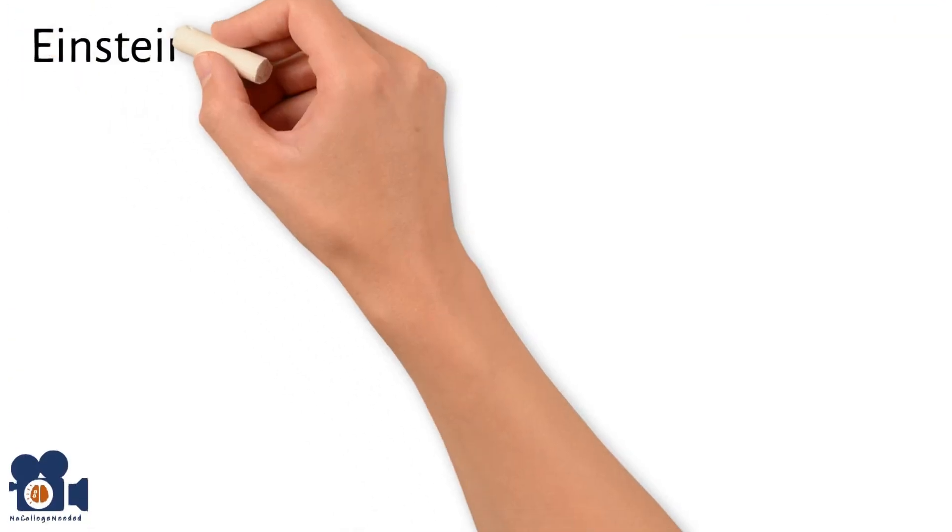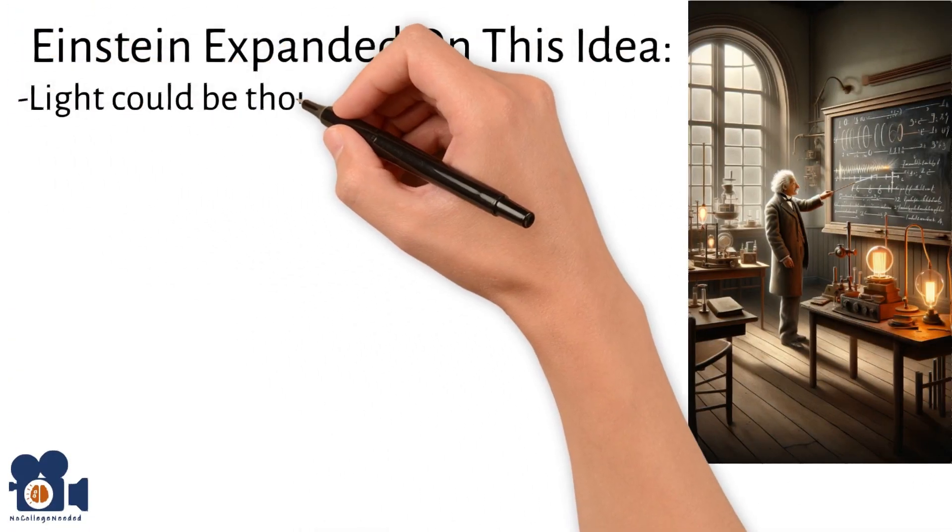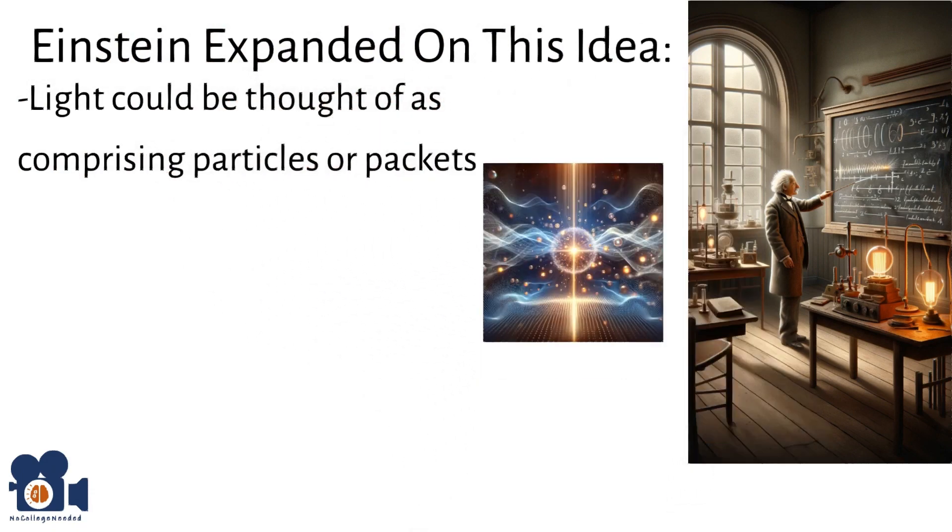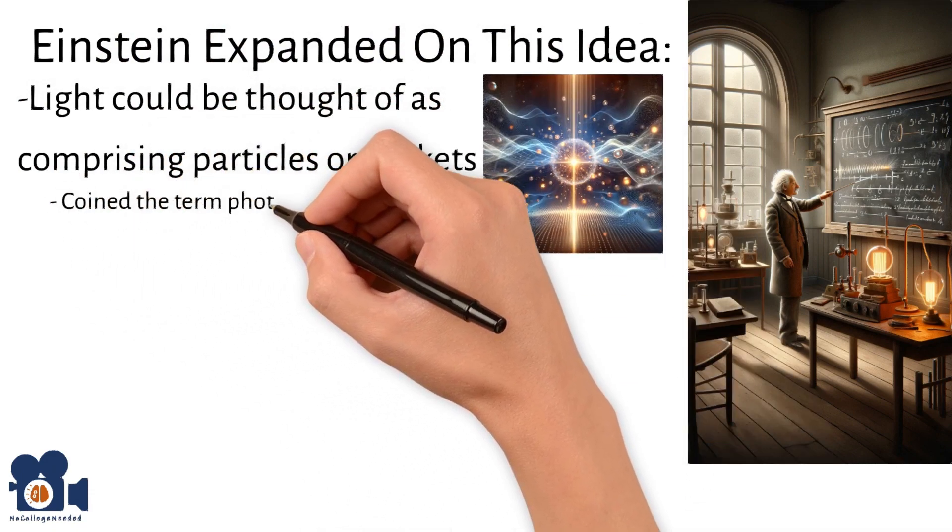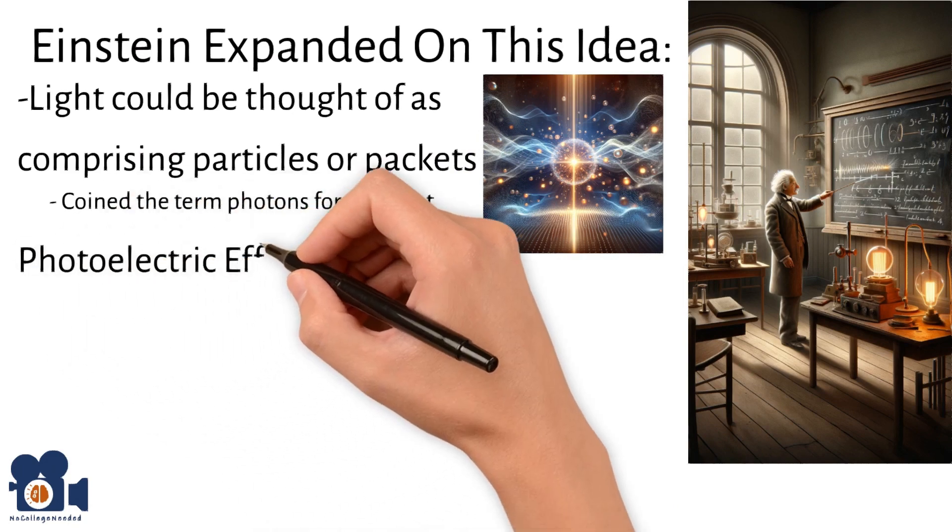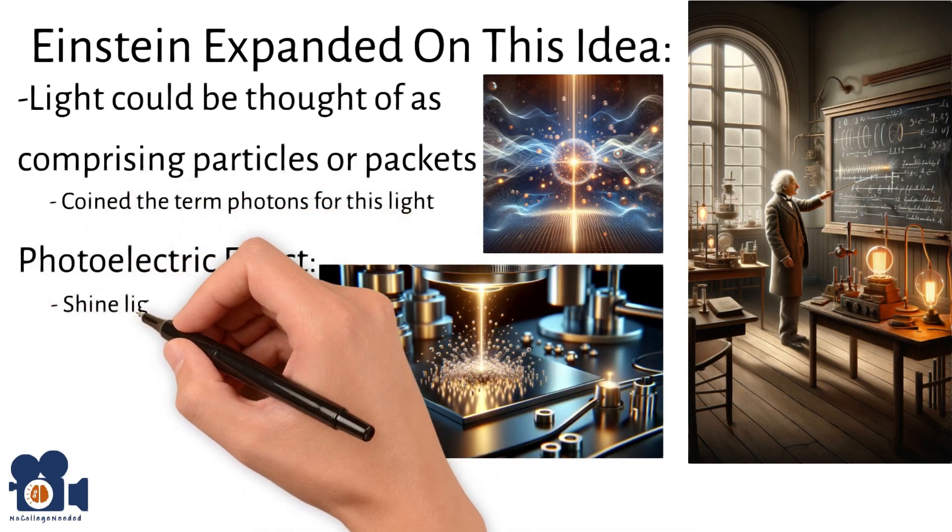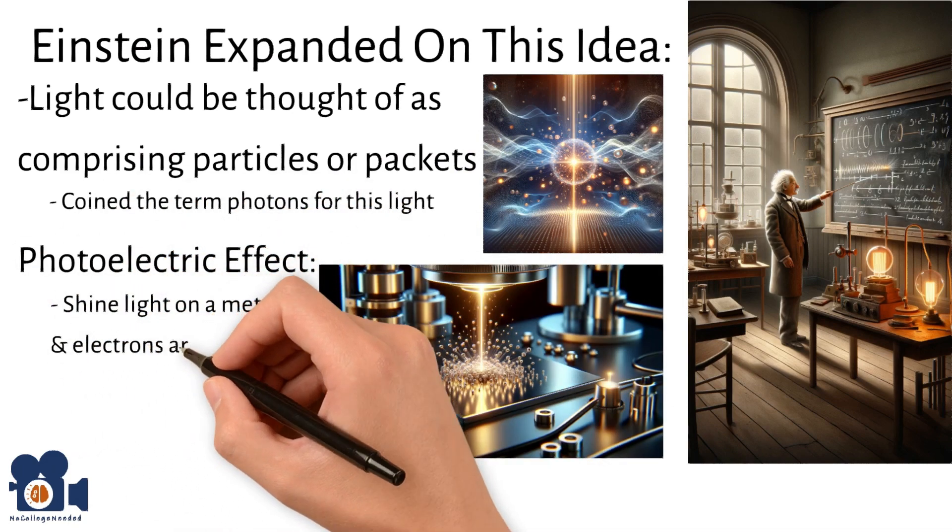Einstein expanded on this idea, showing how light could be thought of as comprising particles or packets, and coined the term photons for this light. This is most evident with the photoelectric effect, in which you shine light on a metal surface and electrons are emitted.